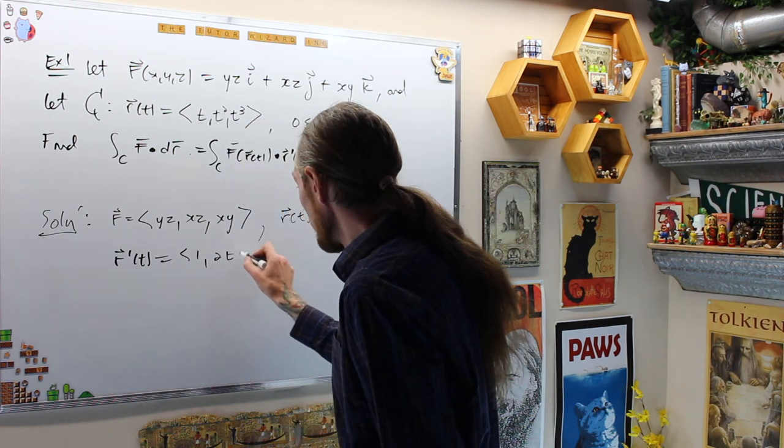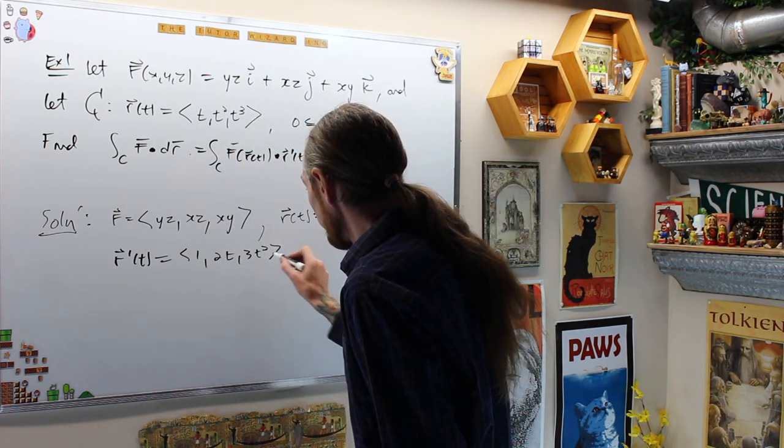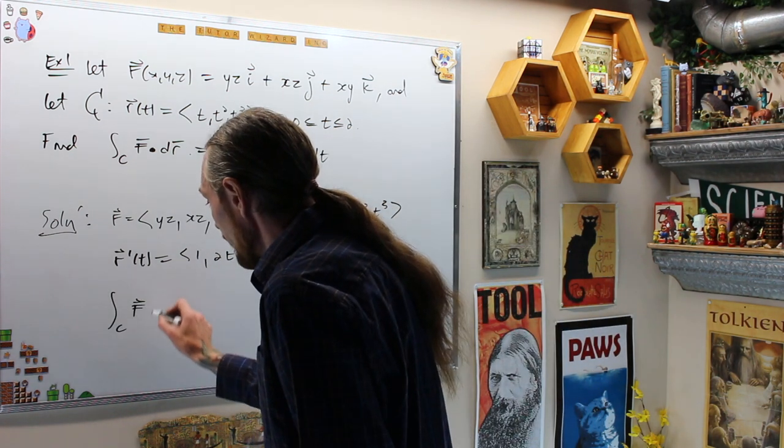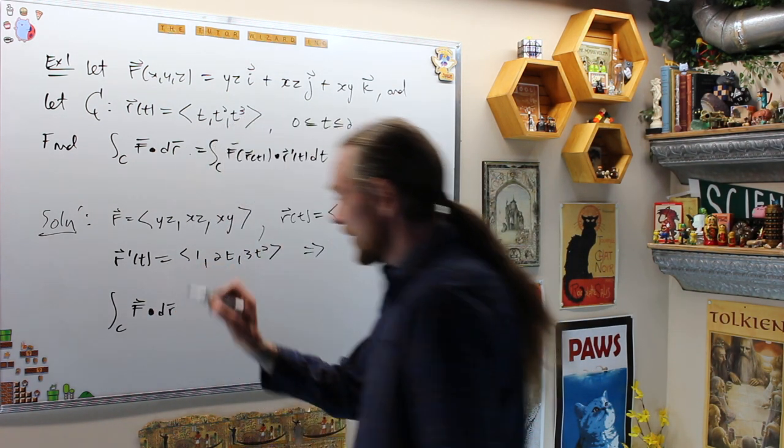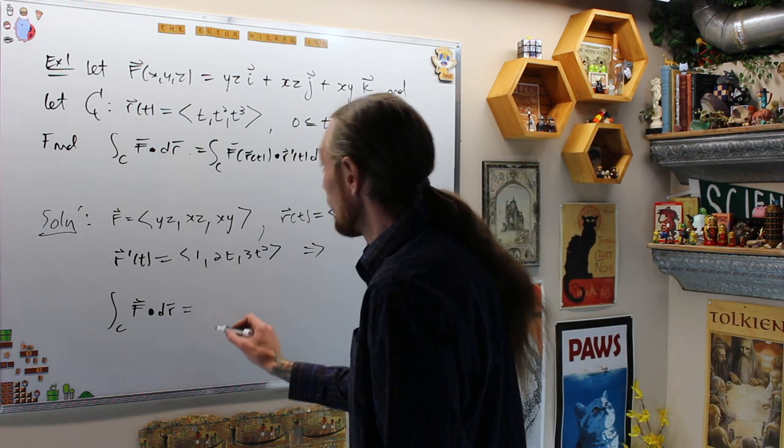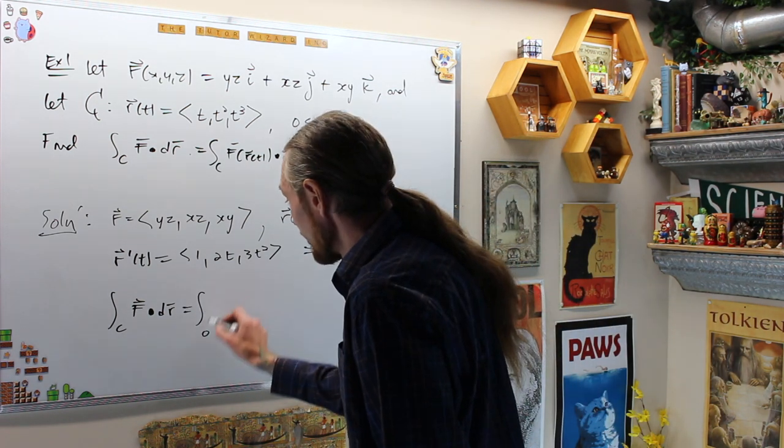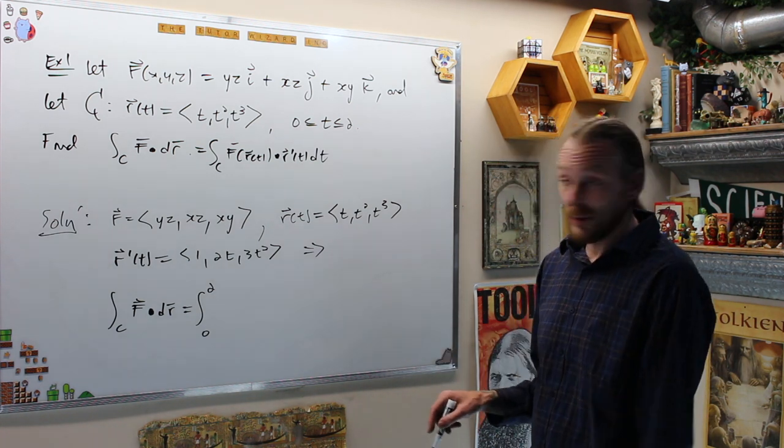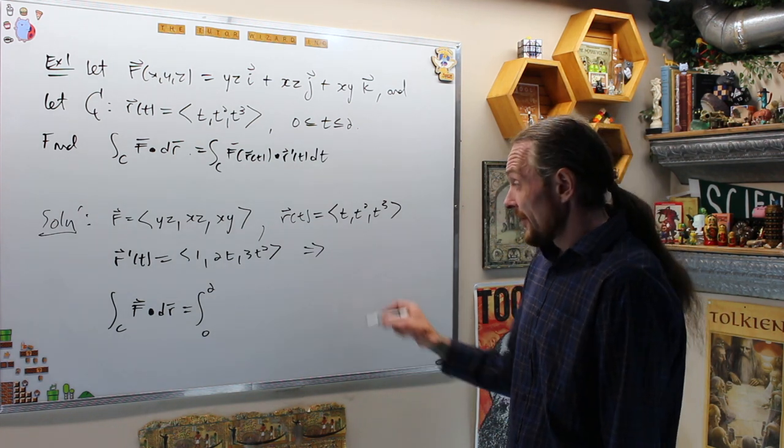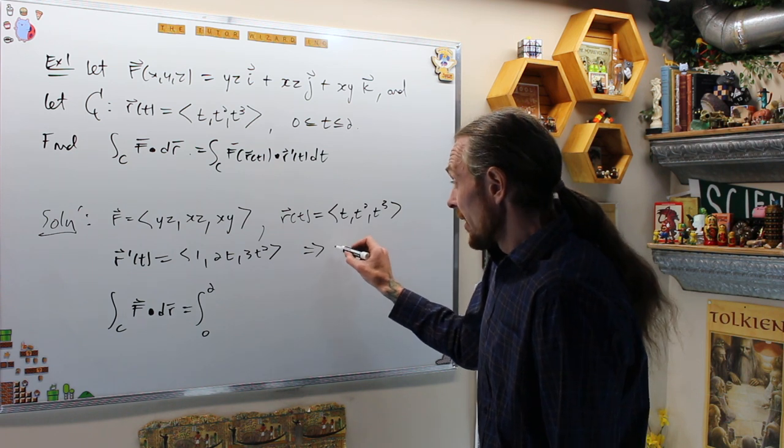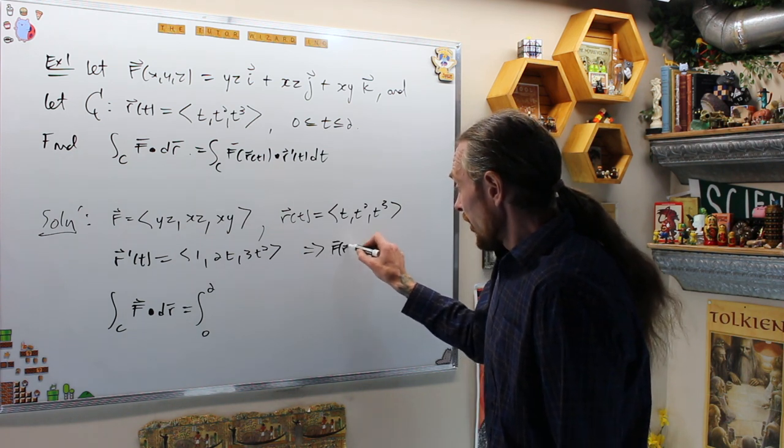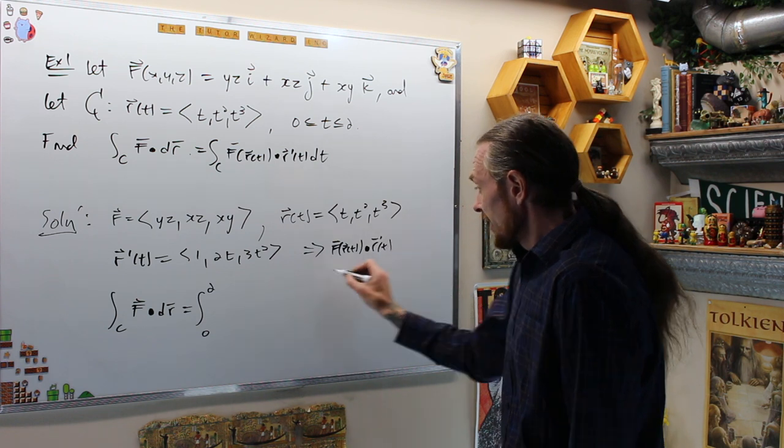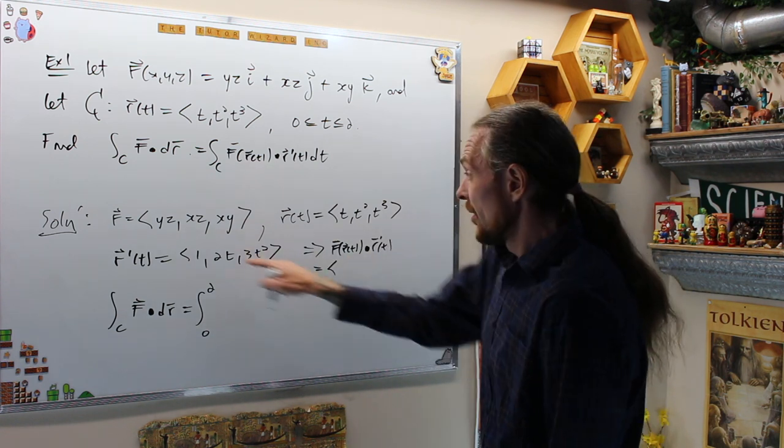And that will be 1, 2T, 3T squared. This says that the line integral of C over this vector field dr is equal to the integral from 0 to 2 of the dot product of these guys. You can compute this dot product first if you want. The dot product first if you want is going to give me F of R of T dot product R prime of T will equal, what are we going to get?